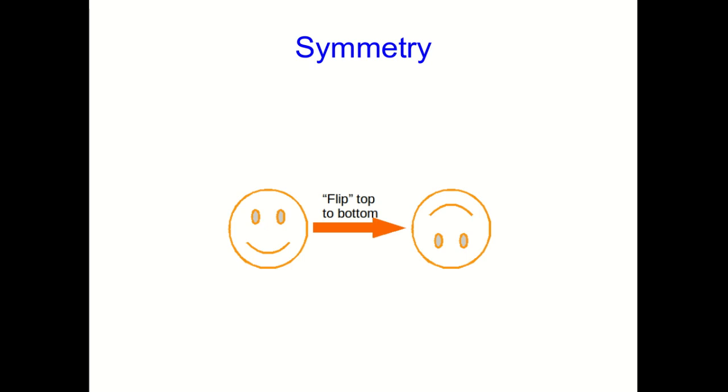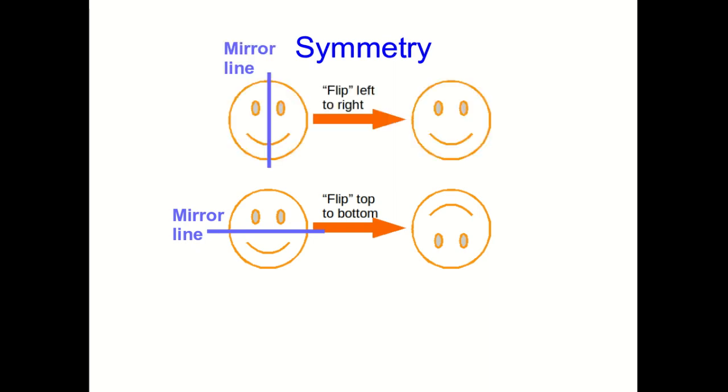Think about this happy face and what happens when we flip it from top to bottom, or in other words, if you reflect it in this horizontal mirror line. Well, it clearly changes. On the other hand, if you reflect it in this vertical mirror line, it appears exactly the same as it was at the beginning. If you rotate it 90 degrees, then it changes. So what this is showing us is that it's symmetric right to left.